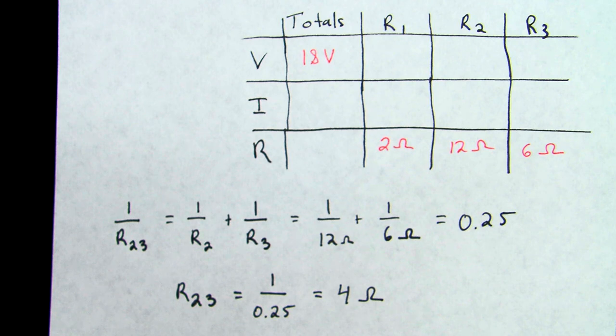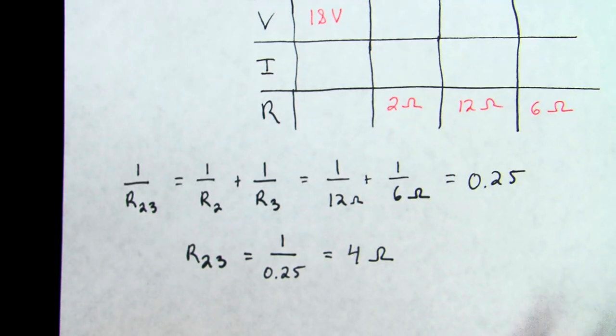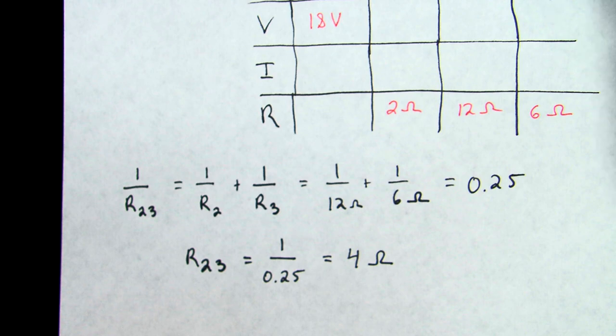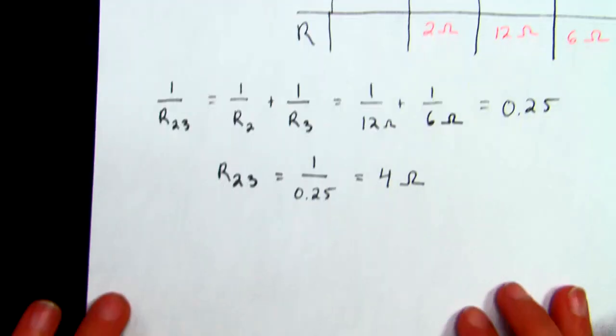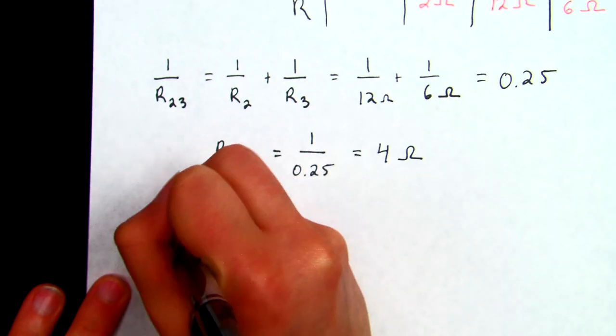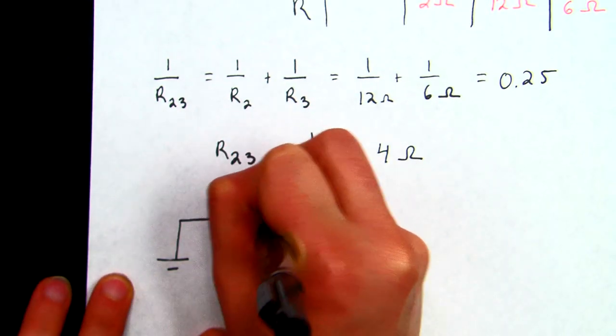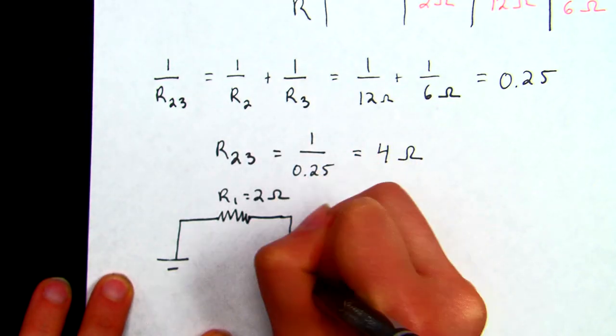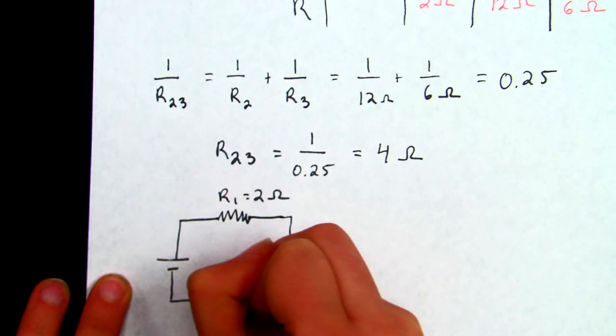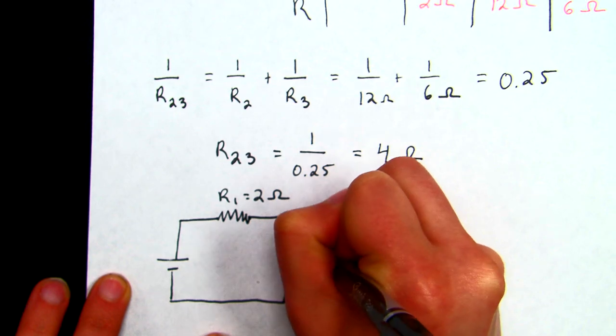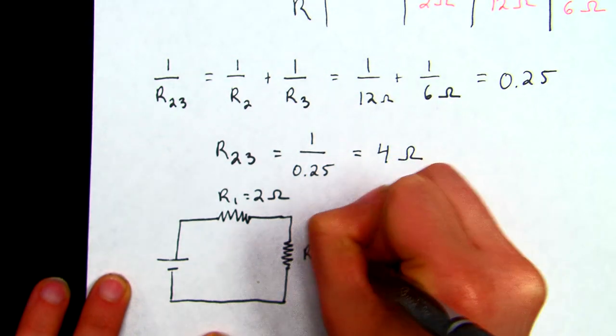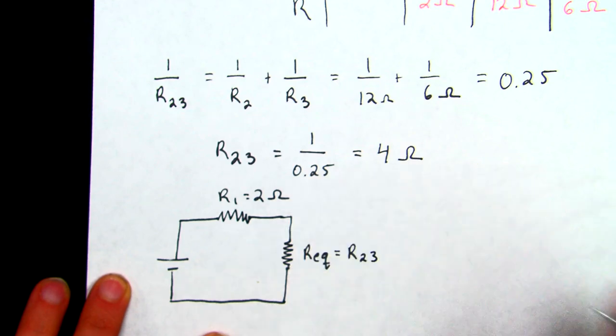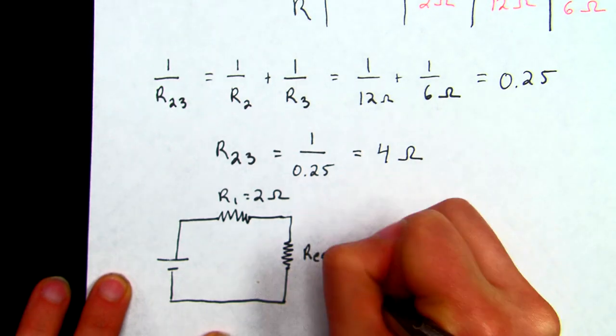Now this is still not our total resistance. This is the resistance of 2 and 3 together, but we said that R2 and R3 are in parallel, but they're in series with R1, so another way we could draw this circuit is we'd still have our R1 be 2 ohms, but we could draw our two resistors that are in parallel with each other as one resistor, but this equivalent resistor would be resistor 2, 3, so the combined equivalent of resistor 2 and resistor 3, which we just said was 4 ohms.